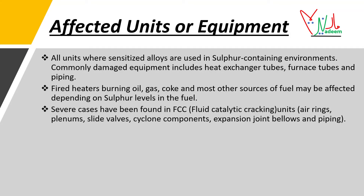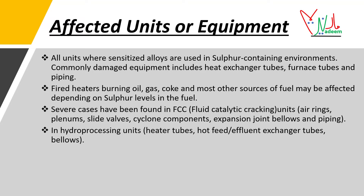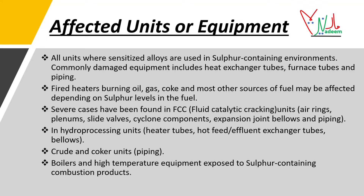Severe cases have been found in FCC (fluid catalytic cracking) units, including air rings, plenums, slide valves, cyclone components, expansion joint bellows, and piping. In hydroprocessing units, affected equipment includes heater tubes, hot feed/effluent exchanger tubes, and bellows. Crude and coker units may have affected piping. Boilers and high-temperature equipment exposed to sulfur-containing combustion products are also susceptible.